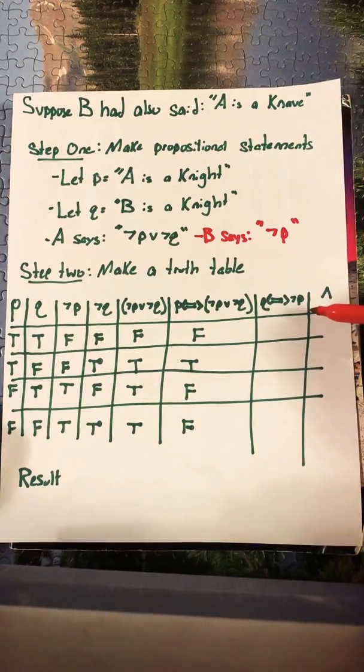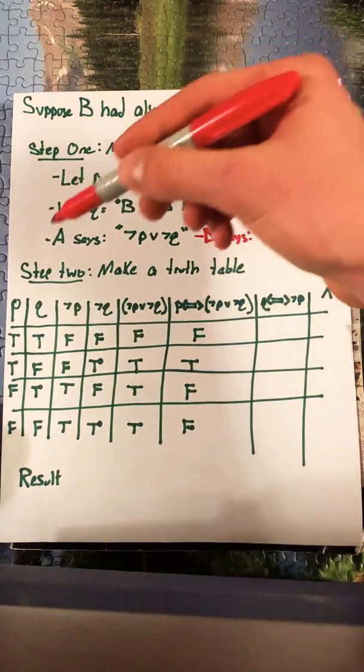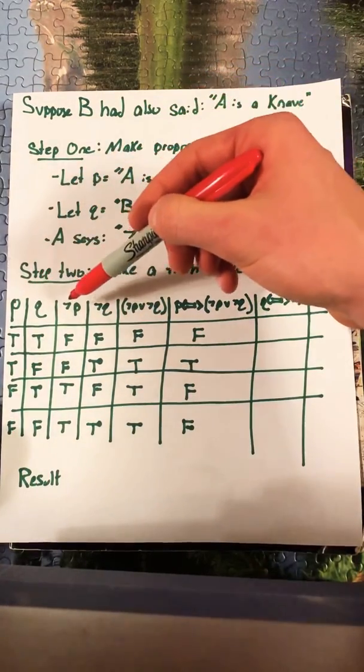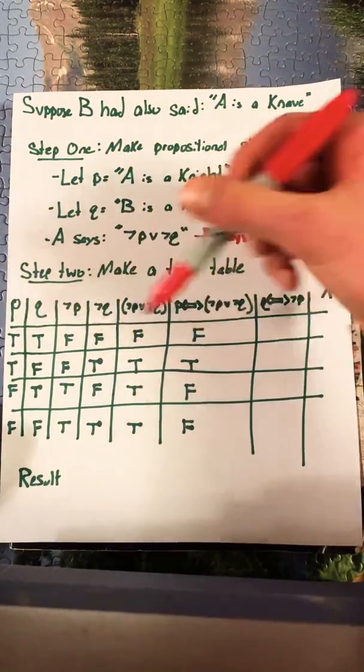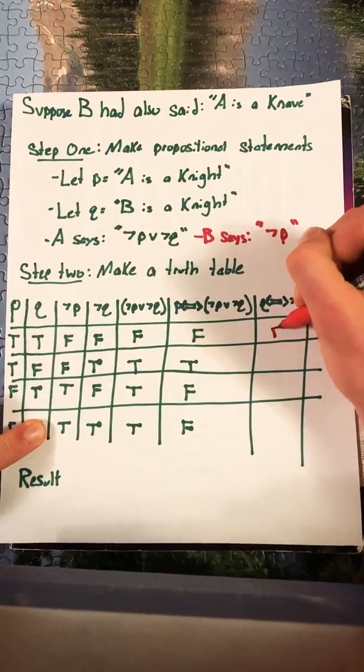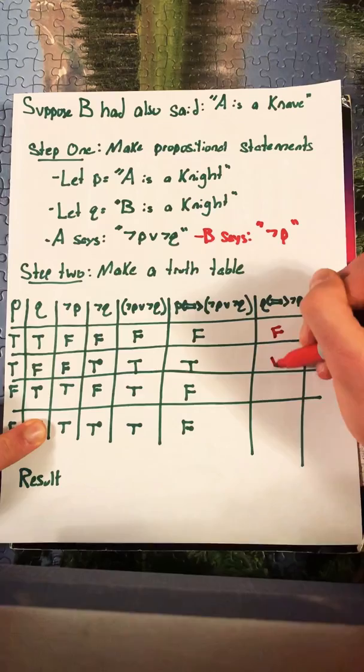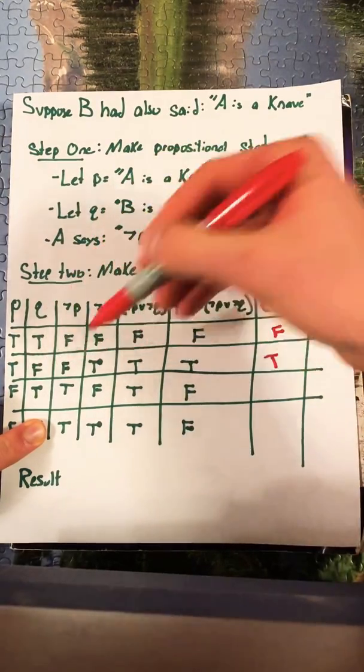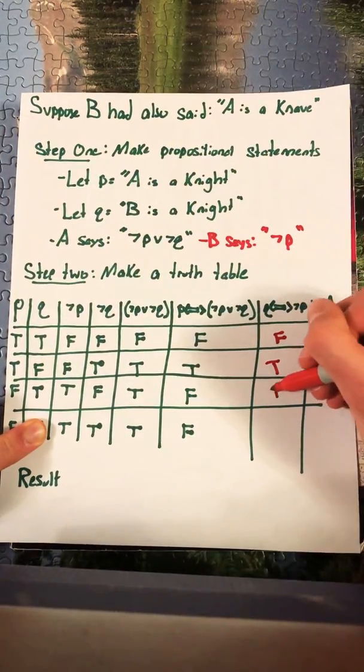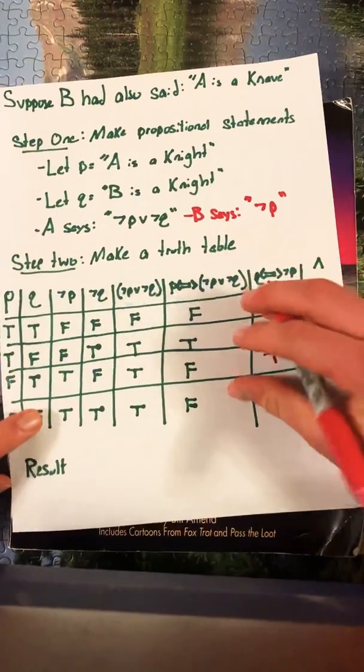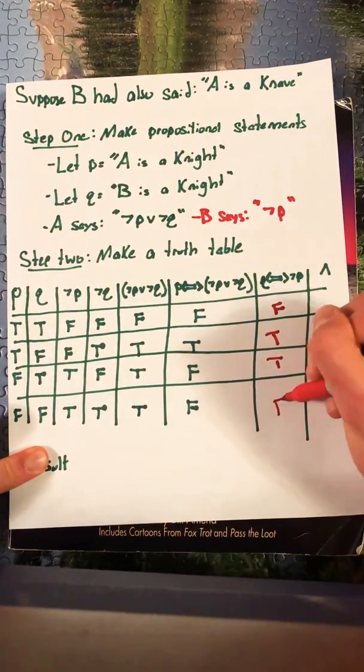Again we're looking at Q if and only if not P. So we only want to be looking at Q and not P. We have a true and a false. That gives us a false. A false and a false. That gives us a true. True and true. That gives us true. And then false and true. That gives us false.